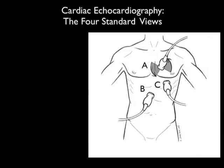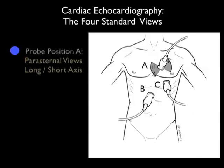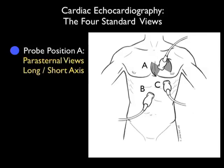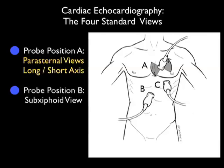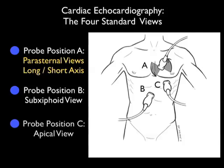Let's begin by reviewing the four standard views of the cardiac echo exam. The first view, as shown in probe position A, is the parasternal views, both long and short axis planes, and this is going to be performed directly on the anterior chest wall. The second view is where probe position B is shown here, coming from the abdominal position or the subxiphoid view of the heart.